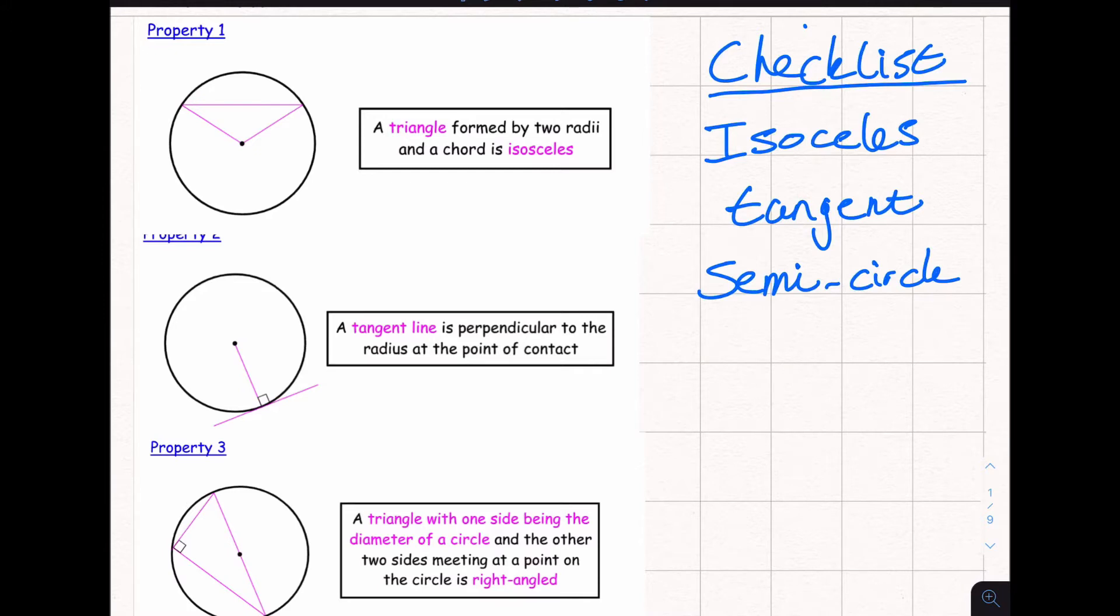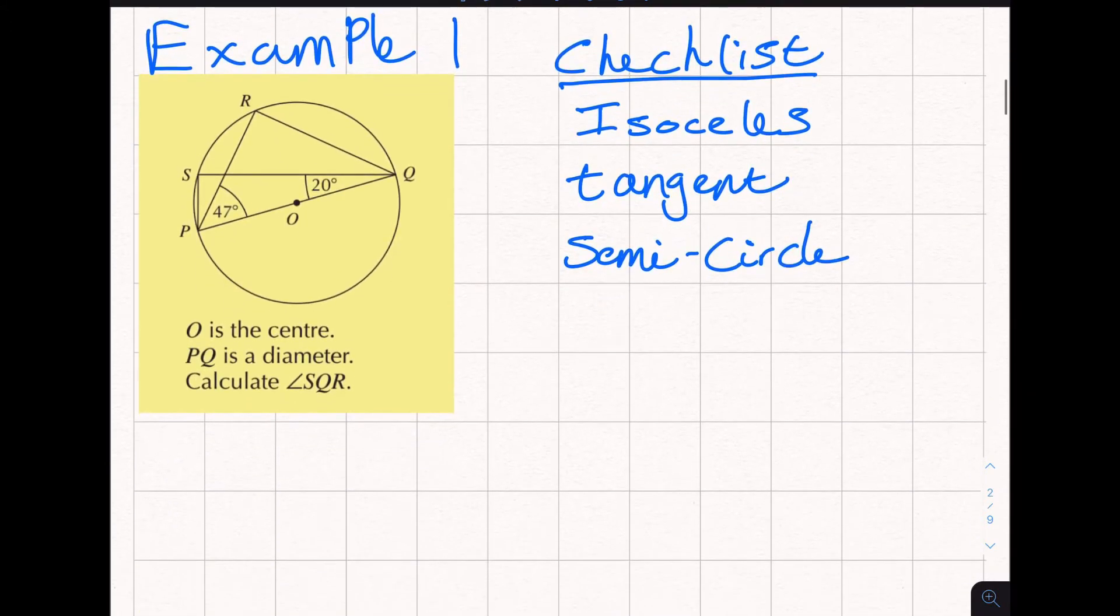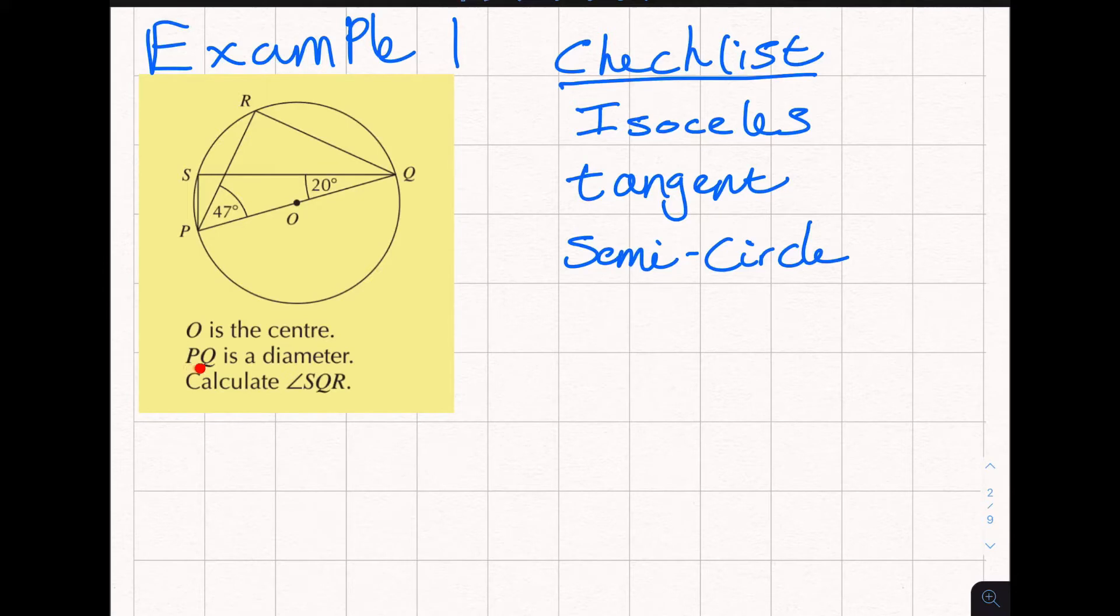Example one. It says PQ is a diameter, calculate angle SQR. So we always identify our angle first, there's S to Q to R, so it's this angle here which we can just mark on and there it is marked. Then we start off with our checklist now. As always start with tangent because it's the most obvious one. I'm looking for a line outside the circle, there's no line outside the circle so there's no tangent and I'm not using that rule. So I go on to my next one which is semicircle. I look to see if there's a diameter and if there is I then just try and join up to make a triangle and there's the right angle I can just mark it on there.